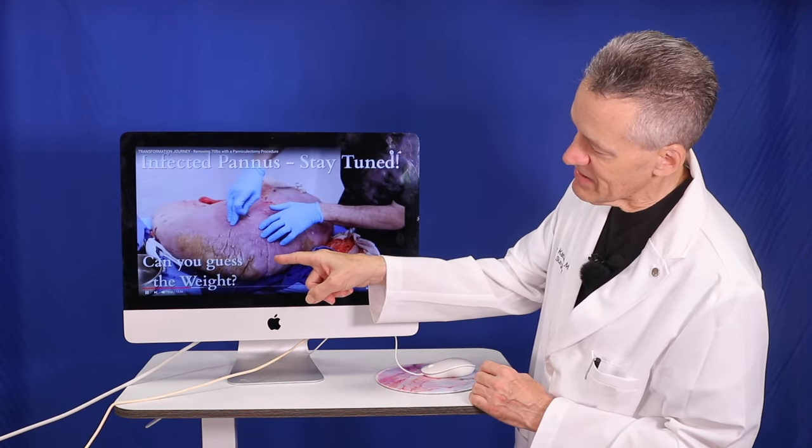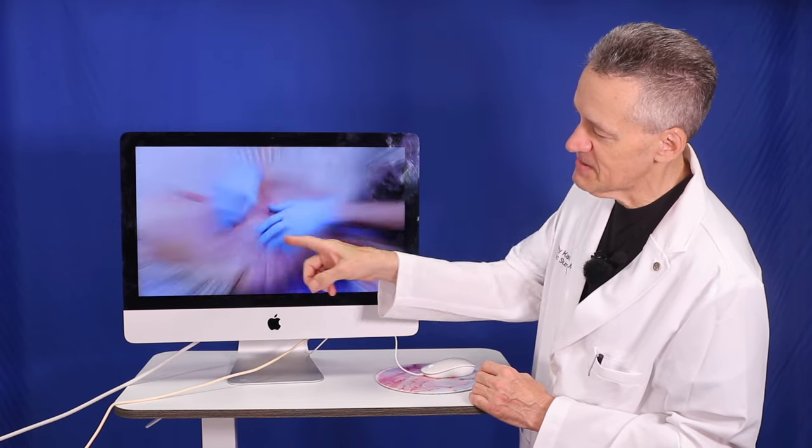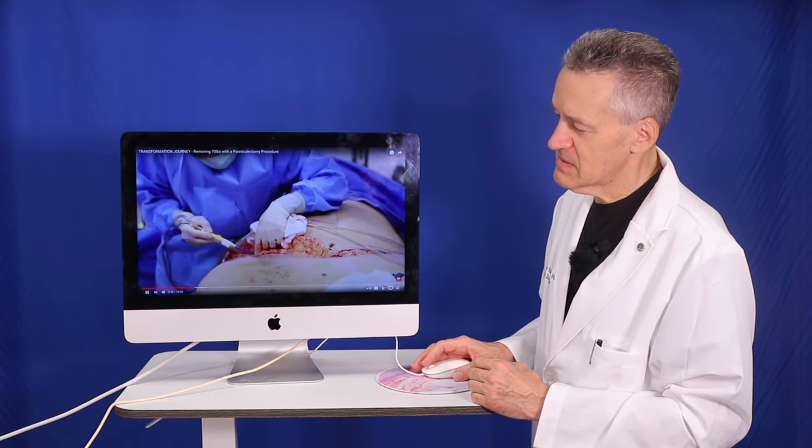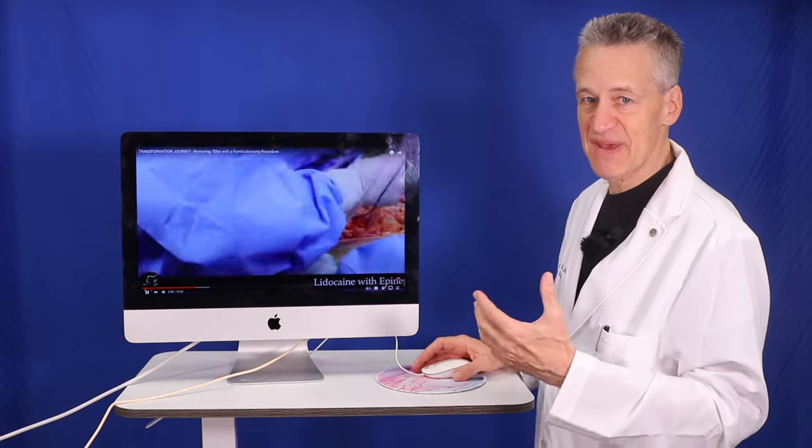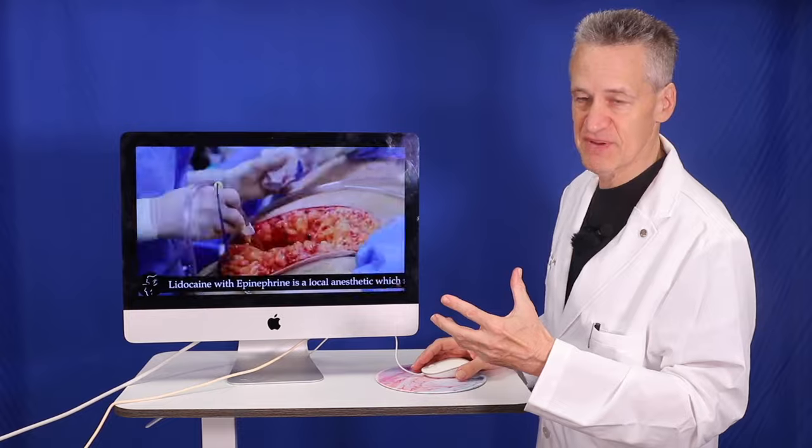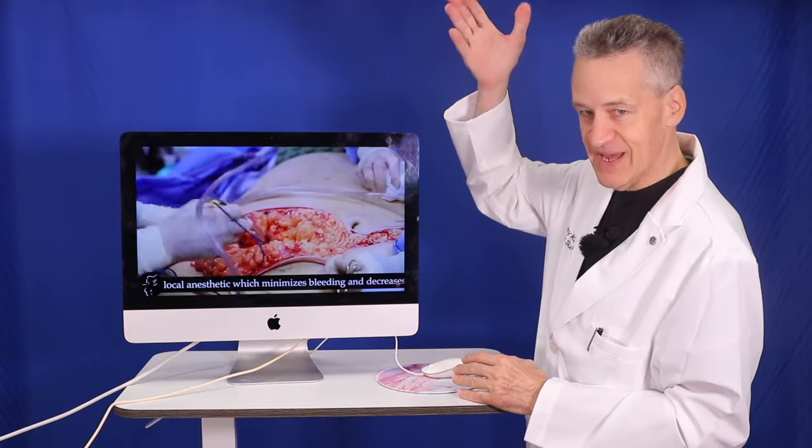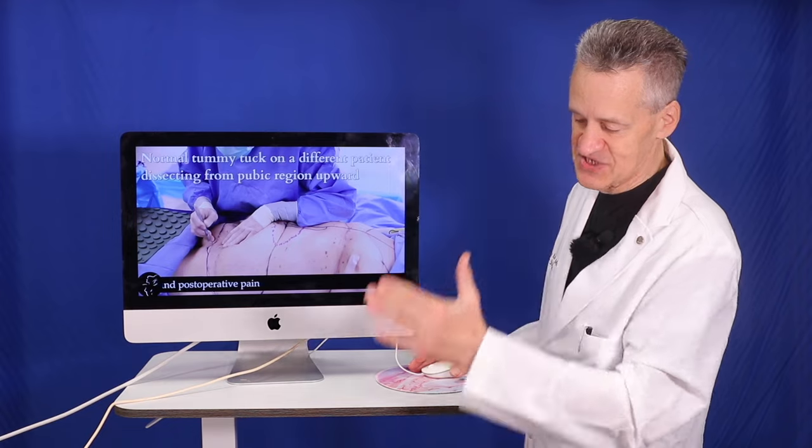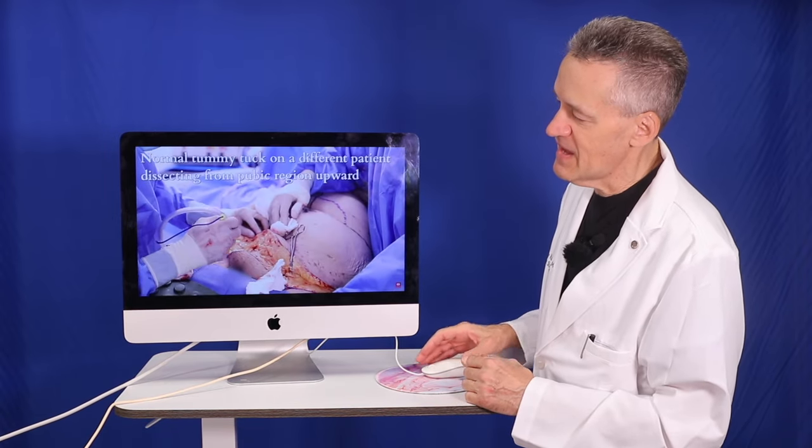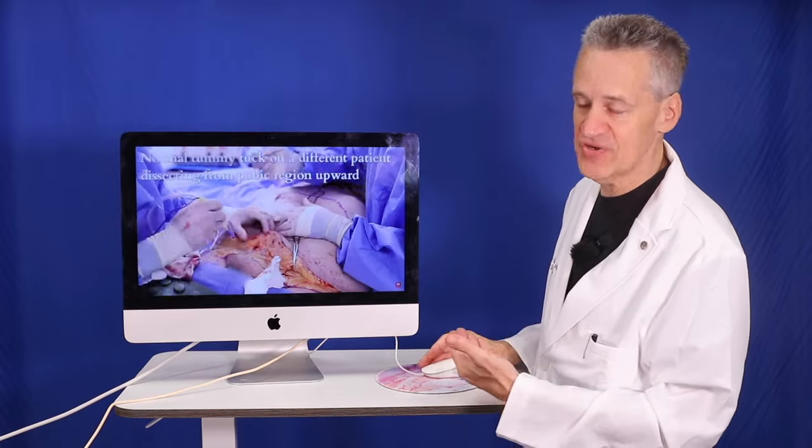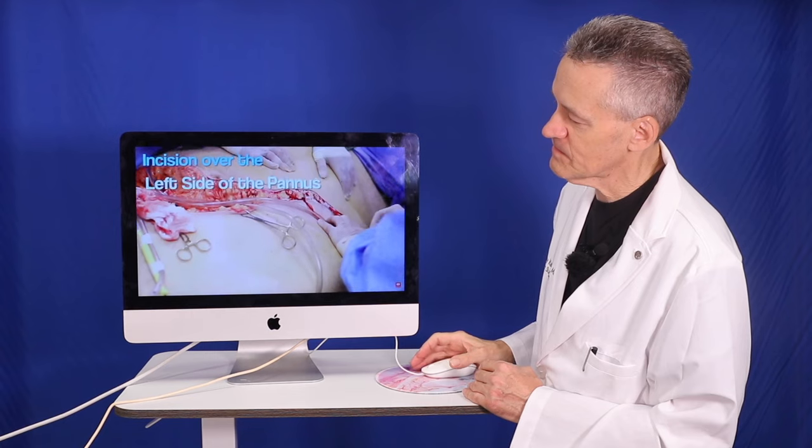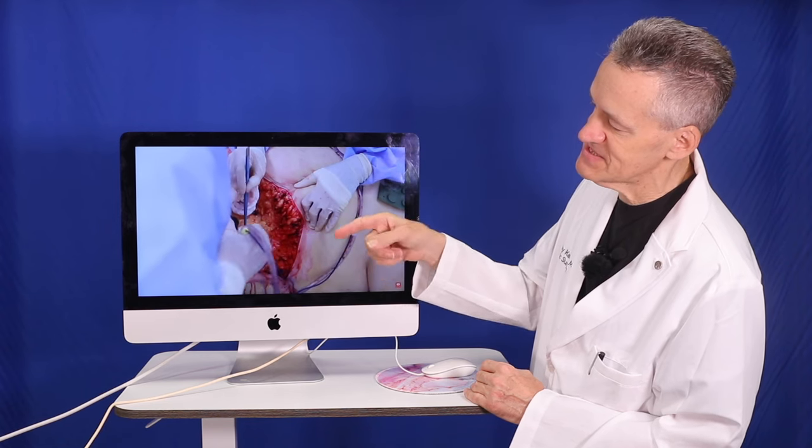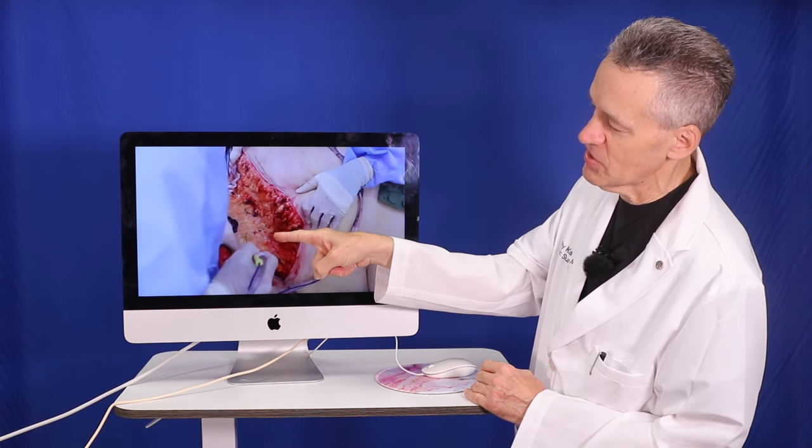It runs out of blood, runs out of oxygen, so the skin dies and is very prone to infection. That's the bottom of the pannus that I removed. Now because this patient's pannus was so big, I did a reverse paniculectomy by making the incision underneath the belly button and coming down on it.